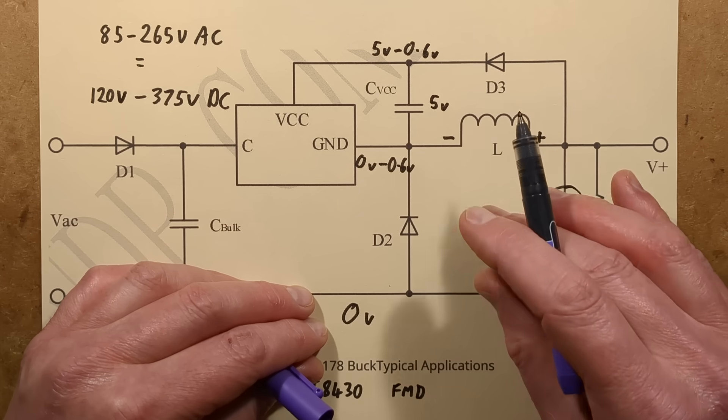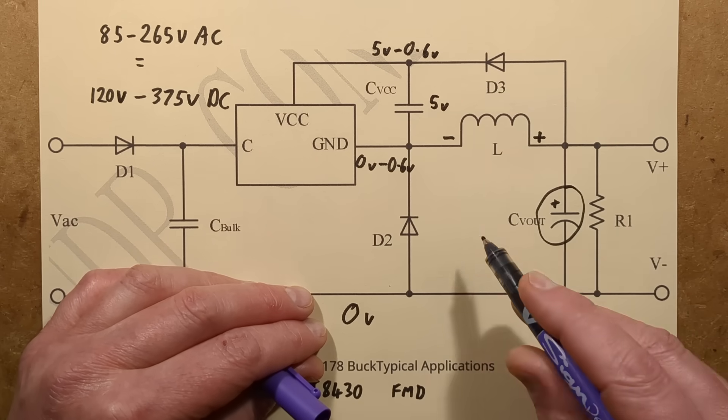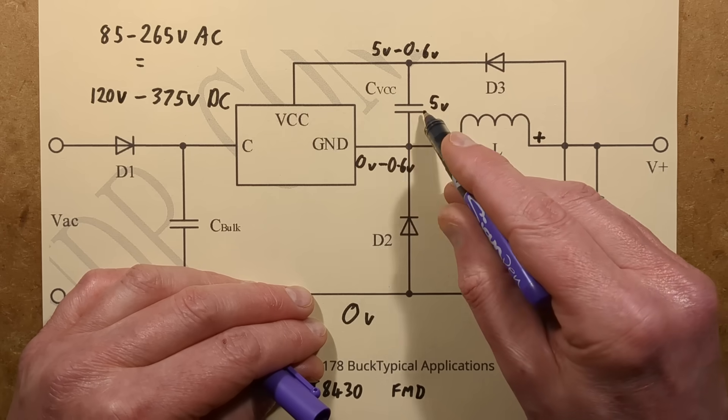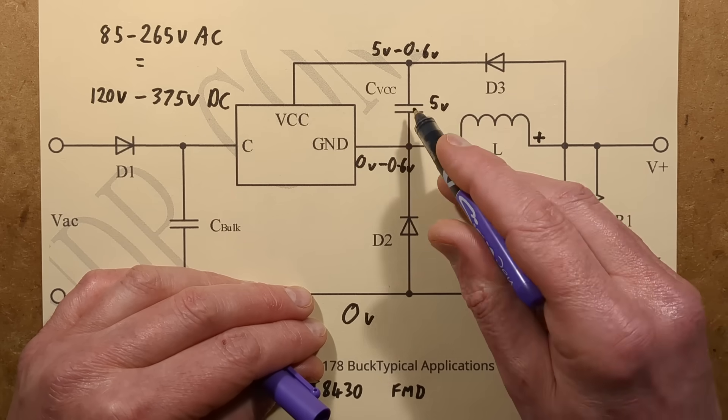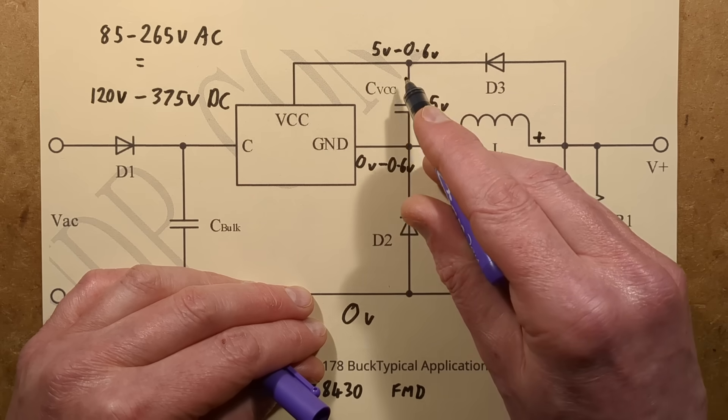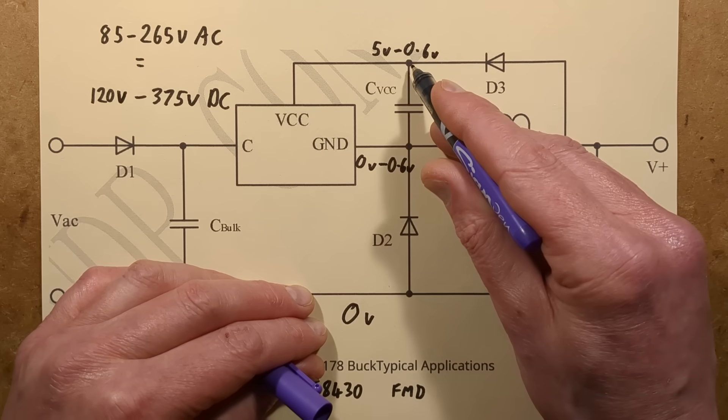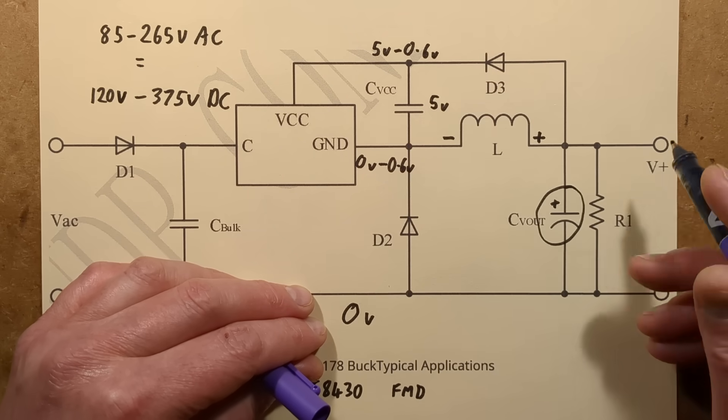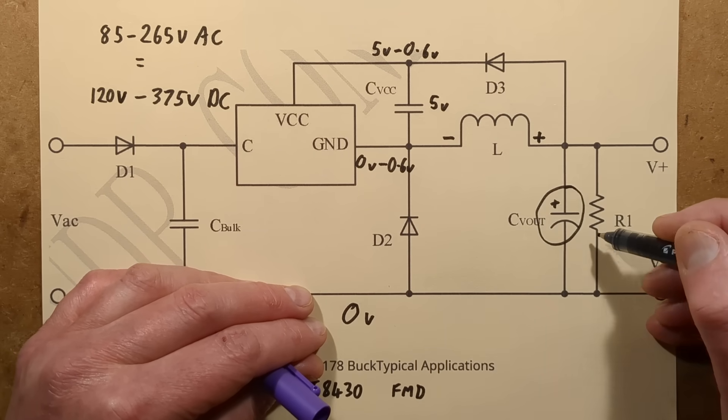So that actually then, having charged that capacitor up to 5 volts to start the chip, it's now powering itself from that feedback circuit. But it's also monitoring the voltage and when it gets up to 5 volts, cut back, but that's why it needs this resistor here as well.